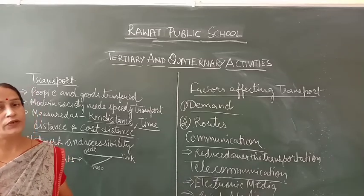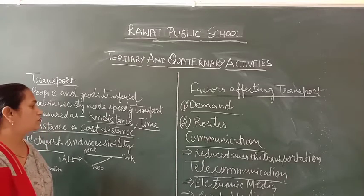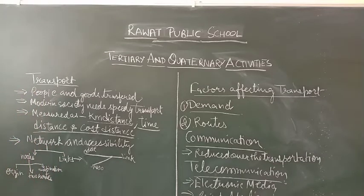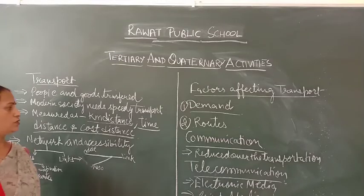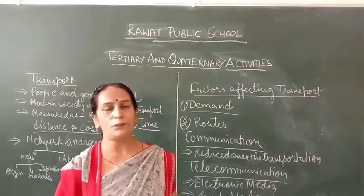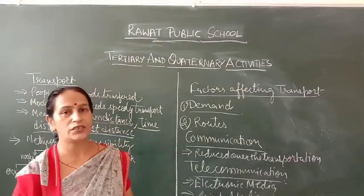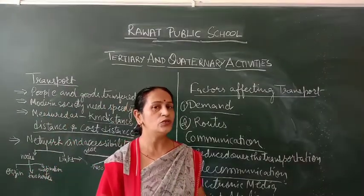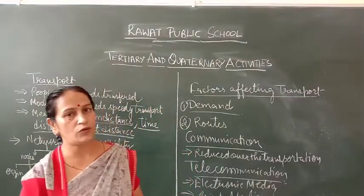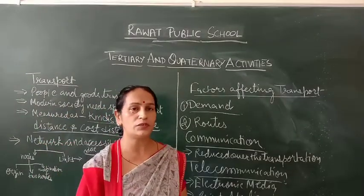Because of the availability of a faster transportation system, transport is generally measured in three types of distances: kilometer distances, time distances, and cost distances. Kilometer distances are measured according to the actual physical distance in kilometers.